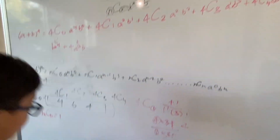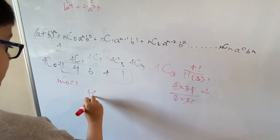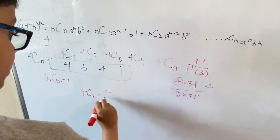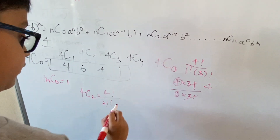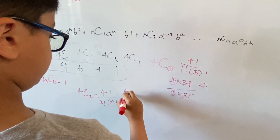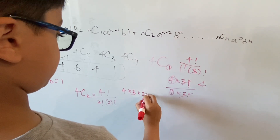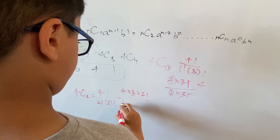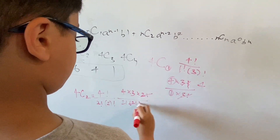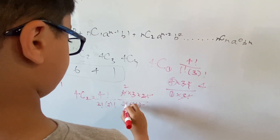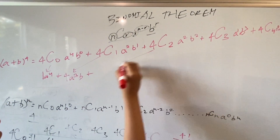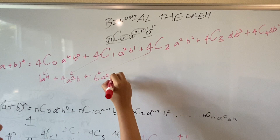Moving on to 4C2. That equals 4 factorial over 2 factorial times (4 minus 2) = 2 factorial. So you can write 4 × 3 × 2 factorial, over 2 factorial × 2 factorial. Cancel these two factorials out, and that will get you 6. So the third term is 6a²b².